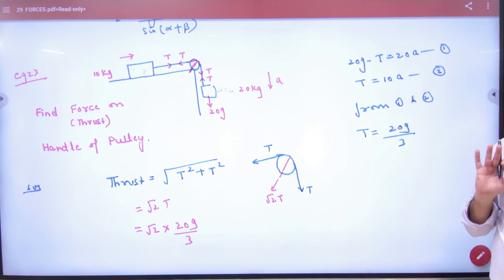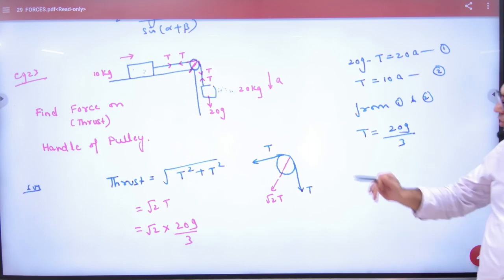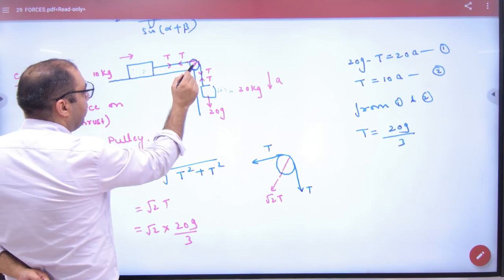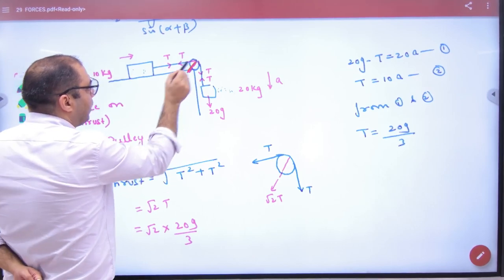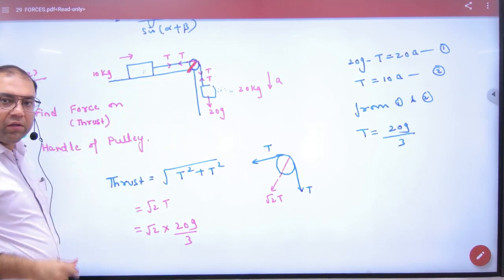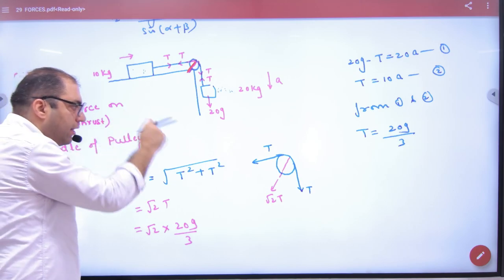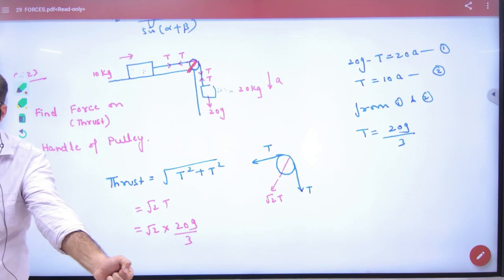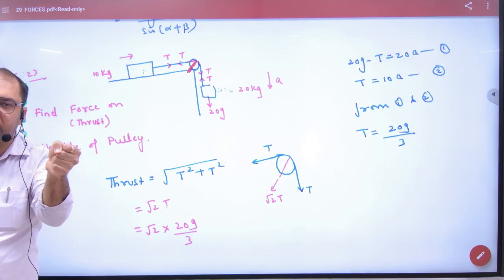But in this question, we need to find the tension on the pulley. Here there is a rod, and the pulley is attached to this rod. Because the system is moving very fast, this tension affects the rod, so how much force is on the rod?